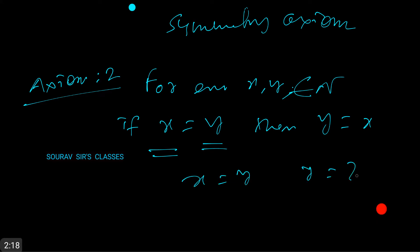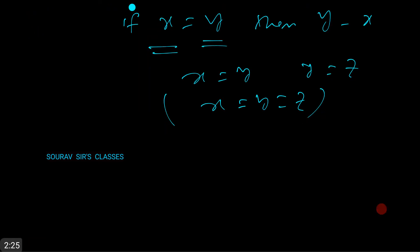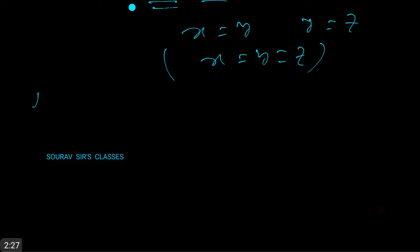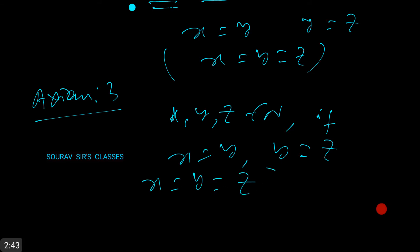So like that: x equal to y and then y equal to z, so simply x equal to y equal to z. This structural pattern needs to be followed. Now going for axiom 3.